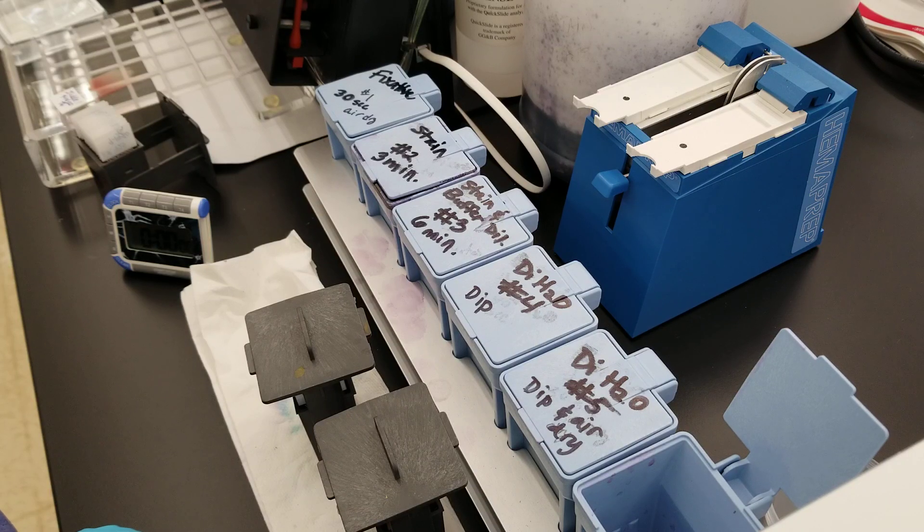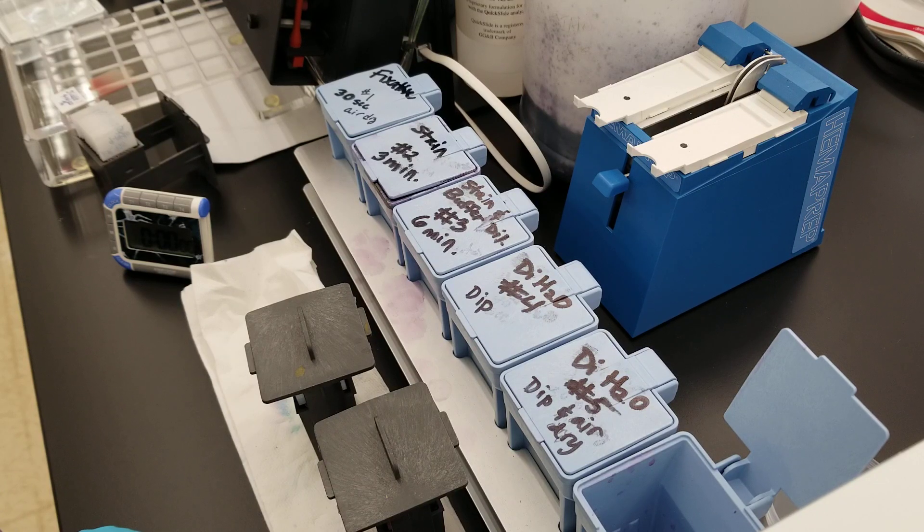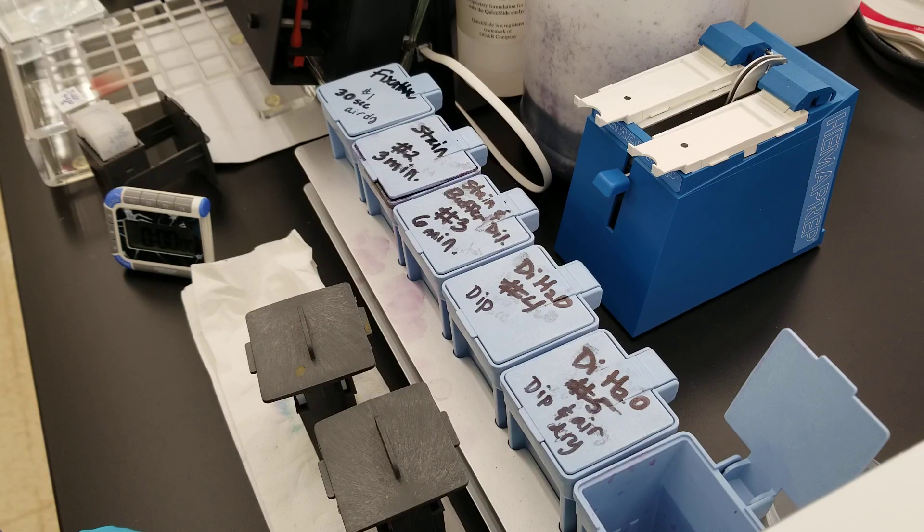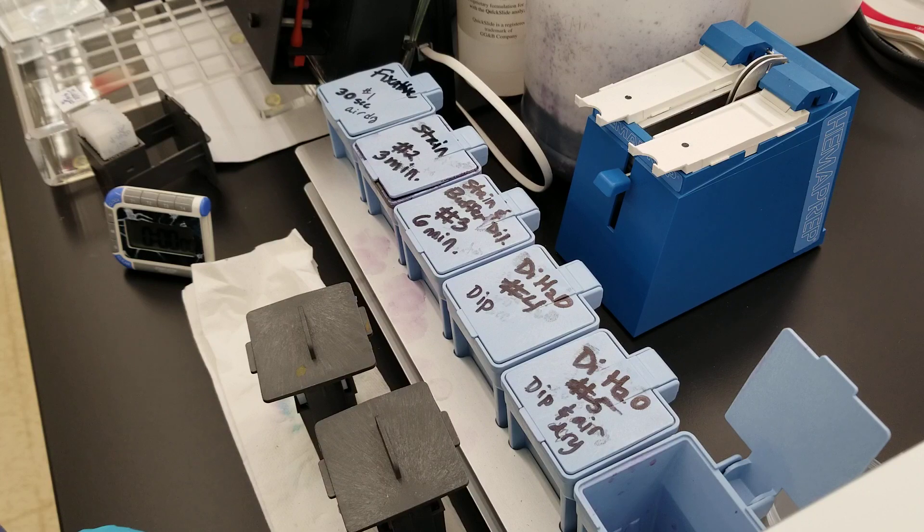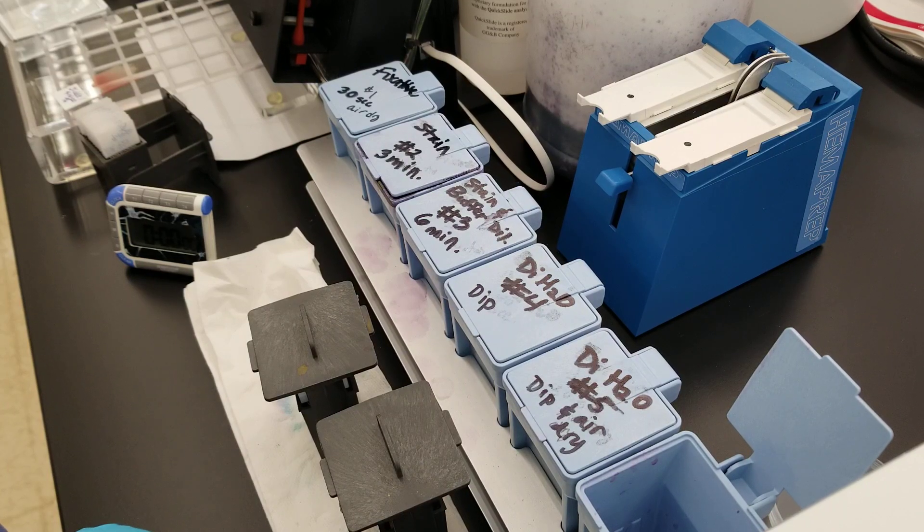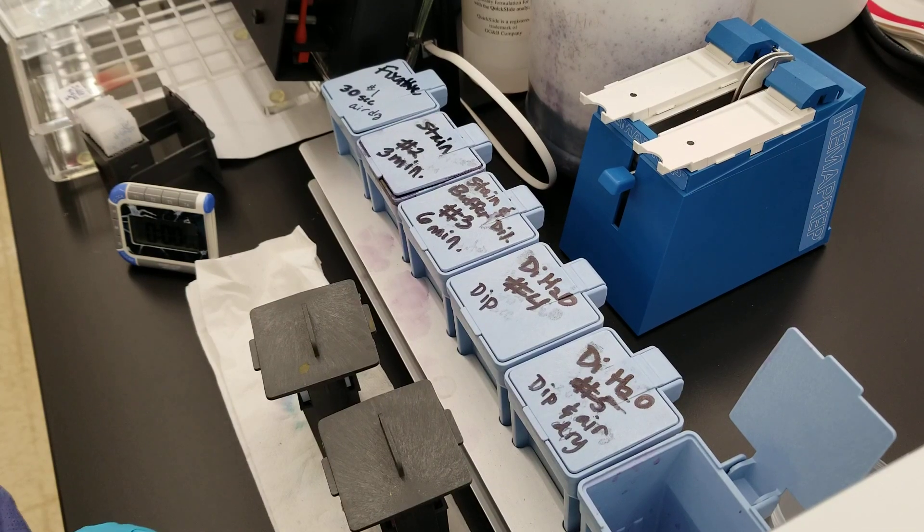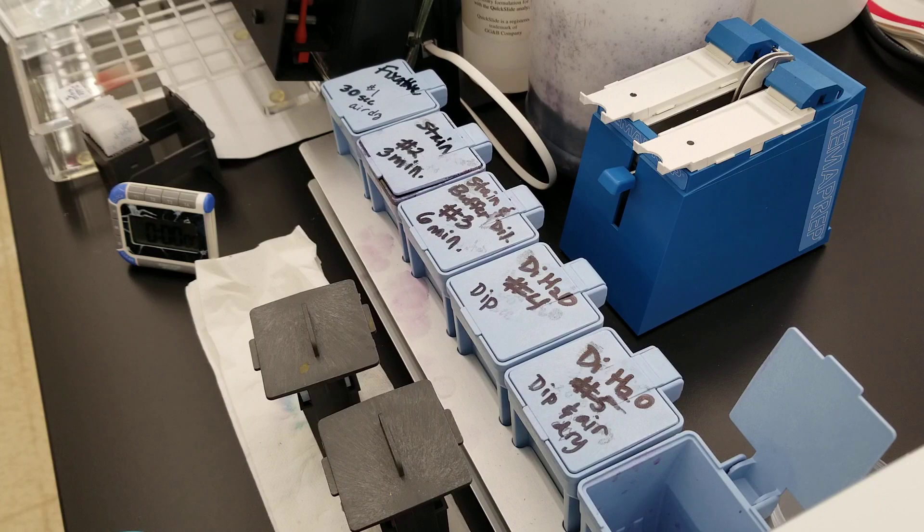Wright-Giemsa stain is a Romanowsky stain for peripheral blood and bone marrow smears. The most important parts of these stains are that you're using an oxidized methylene blue, azur B, and eosin Y stain. The methylene blue and azur B stains will stain the nucleus a shade of blue to purple, so you can use them to differentiate and make a diff smear and perform a white blood cell diff. The eosin Y dye is used to stain the cytoplasm of the cells an orange to pink color.